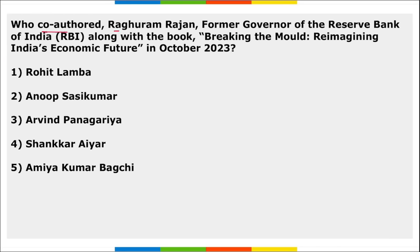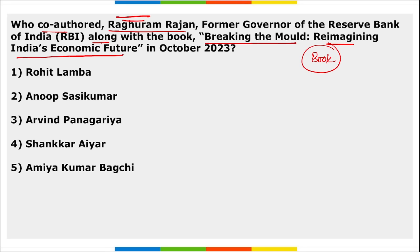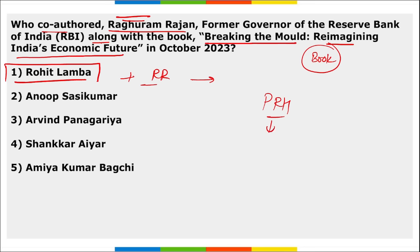A book titled 'Breaking the Mold: Reimagining India's Economic Future' was recently authored. There were two co-authors: Raghuram Rajan, former Governor of RBI, and Rohit Lamba. This book will be published by Penguin Random House and is set to be released in December 2023. The authors provide ideas about the economic future of India.